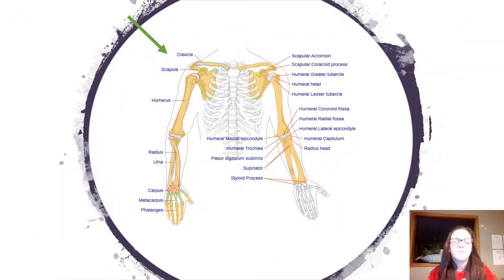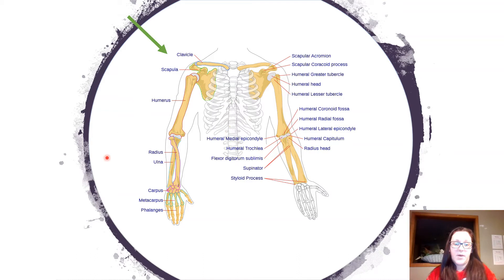And that's Pandy and Jude when they were little. This is another diagram showing the bones that can be affected by the gene. It can affect your clavicle, scapula, humerus, radius, ulna, carpus, metacarpus, and phalanges.